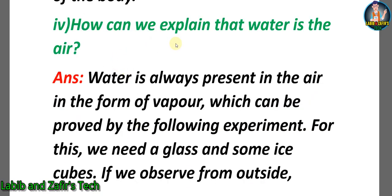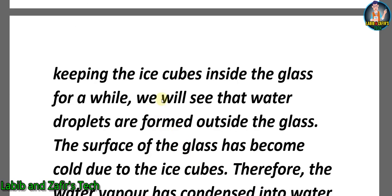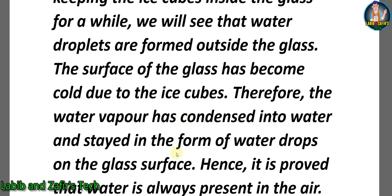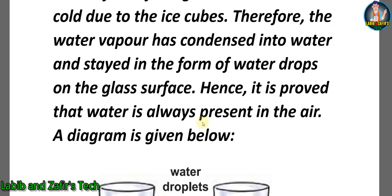Fourth descriptive question: How can we explain that water is in the air? Answer: Water is always present in the air in the form of vapor, which can be proved by the following experiment. We need a glass and some ice cubes. If we observe the glass with ice cubes inside for a while, we will see that water droplets form outside the glass. The surface of the glass has become cold due to the ice cubes, so the water vapor has condensed into water droplets on the glass surface. Hence it is proved that water is always present in the air.